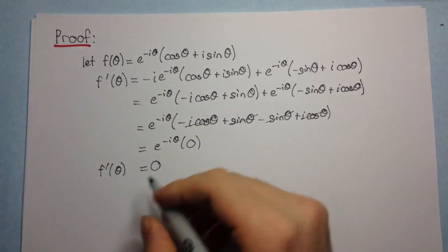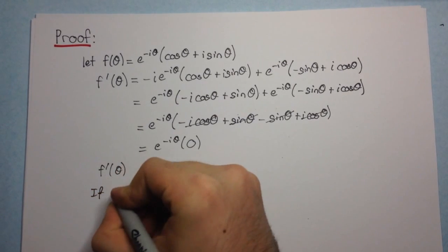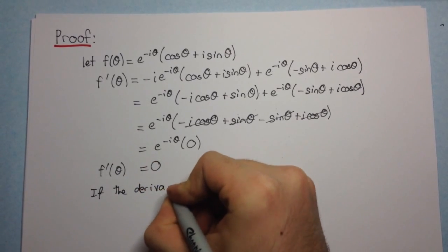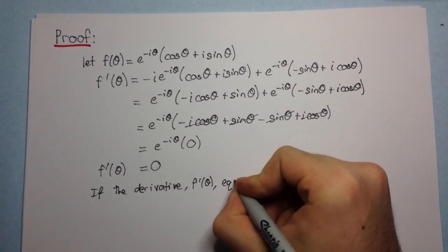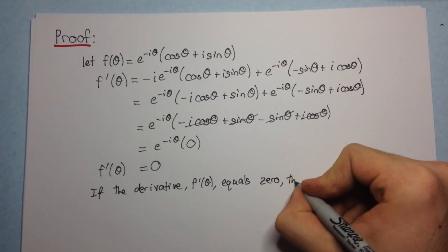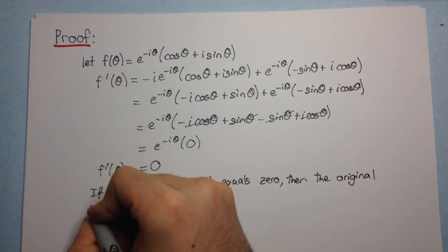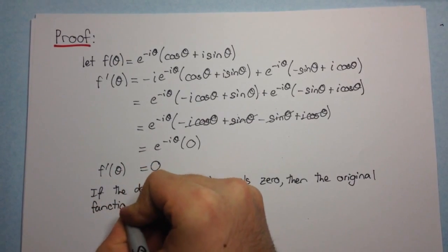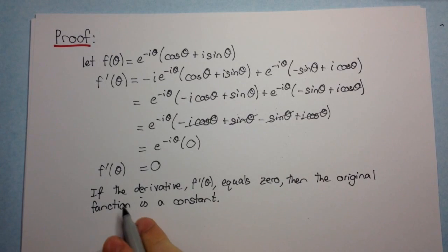So we have that the derivative of this function is equal to zero. So what does this mean? If the derivative, which is f dash theta, equals zero, then the original function, the original function is a constant. Right? So if you differentiate a function and you get zero, that means that the original function must have been a constant.